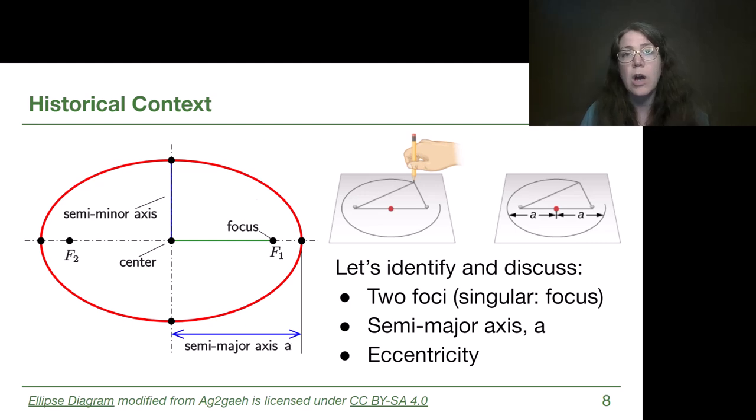For an ellipse, there's not one single diameter and there's not one single radius. Instead, there's a major axis and a minor axis. Now that major axis is the one that astronomy uses most often. It's more relevant to the way that we can understand what planets are doing, and it is from the center to the edge along that longest axis, which has to run through both focus points.